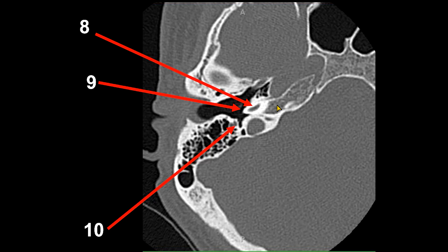Number eight is the basal turn of the cochlea, and number nine represents the small bony hillock overlying the cochlear basal turn — that is the cochlear promontory. Number ten points to the descending portion of the facial nerve.